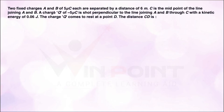Two fixed charges A and B of 5 micro coulombs each are separated by a distance of 6 cm. C is the midpoint of the line joining A and B. A charge Q of minus 5 micro coulombs is shot perpendicular to the line joining A and B through C with a kinetic energy of 0.06 joule. The charge Q comes to rest at a point D. The distance CD is to be found.